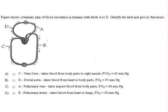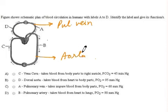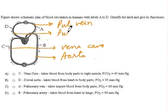In the schematic plan of blood circulation, let us check the labels first. A is pulmonary vein, B is aorta, C is vena cava, and D is pulmonary artery.